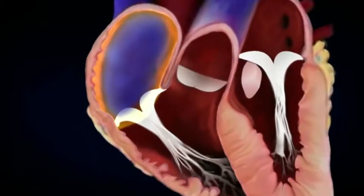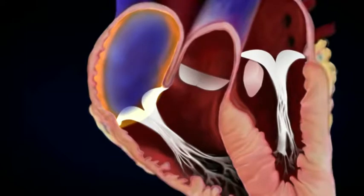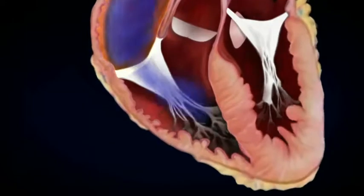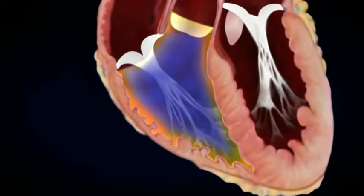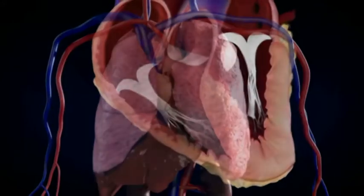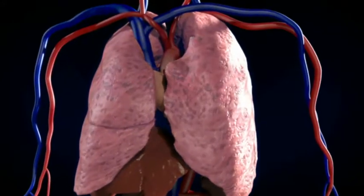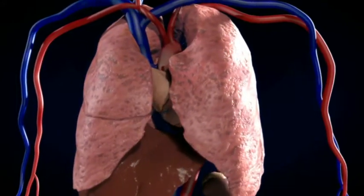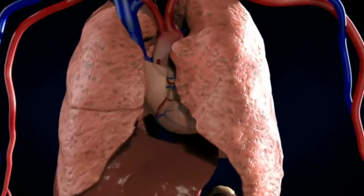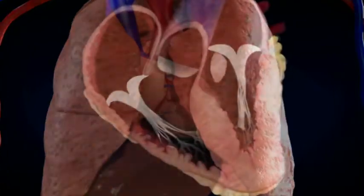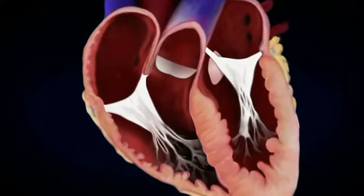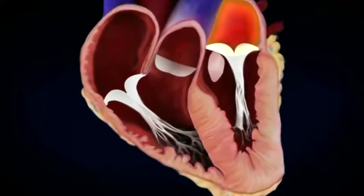Blood enters your heart through the right atrium and is then pumped into the right ventricle. The right ventricle sends the blood to your lungs where carbon dioxide is removed from the blood and oxygen is added. Once the blood is oxygenated, it moves to the left atrium.